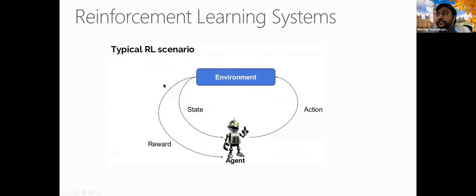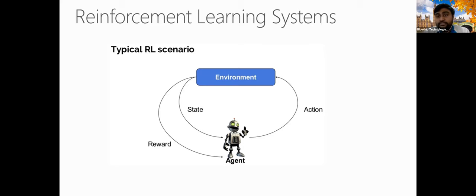In a typical reinforcement learning scenario, we need to define the environment, a state, a reward, and an action to train an agent. The key thing is we don't need to provide past data — unlike in machine learning or deep learning where we need a lot of structured or unstructured data. In reinforcement learning, we create an environment and provide a state and reward function. Based on the action the agent takes, it receives a positive or negative reward, and it learns from that.